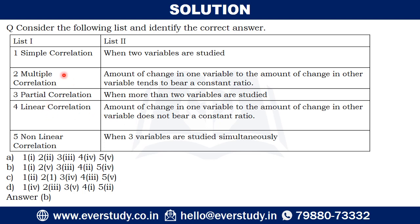Linear correlation occurs when the amount of change in one variable is accompanied by the same proportional change in the other variable — that is, the change should be in a constant ratio. Non-linear correlation is when the amount of change in one variable to the amount of change in another variable does not maintain a constant ratio — the ratio is not compulsory to be the same in non-linear correlation.